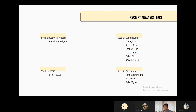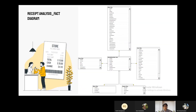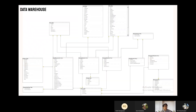Lastly, we have the receipt analysis fact. We start by naming the business process as receipt analysis process. Then we assign our grain as each receipt. We choose time dim, store dim, tenant dim, card dim, and date dim as our dimension tables. We set receipt ID as the degenerate dimension, because we want to know which receipt we are referring to in each row. The last step is choosing the measure: we choose net sale amount, earn point, and retail type. Here is a diagram of the receipt analysis fact, and this is the full data warehouse diagram. This is the bus matrix, which tells us which fact can access which dimension.